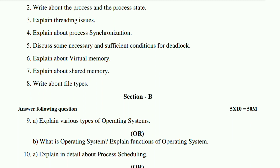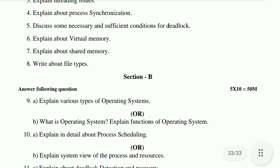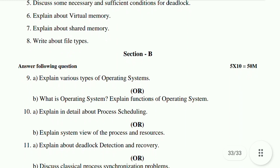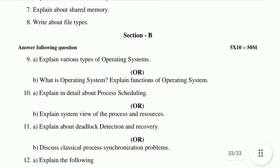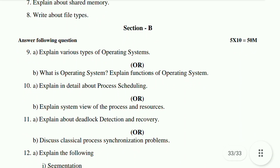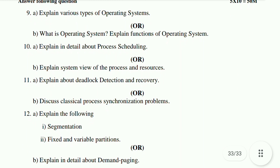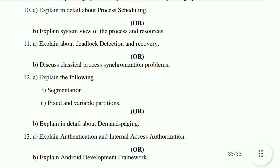Tenth A - explain in detail about process scheduling. Tenth B - explain system view of the process and resources. Eleventh A - explain about deadlock detection and recovery. Eleventh B - discuss classical process synchronization problems. Twelfth A - explain the following: segmentation, fixed and variable partitions. Twelfth B - explain in detail about demand paging. Thirteenth A - explain authentication and internal access authorization. Thirteenth B - explain Android development framework.